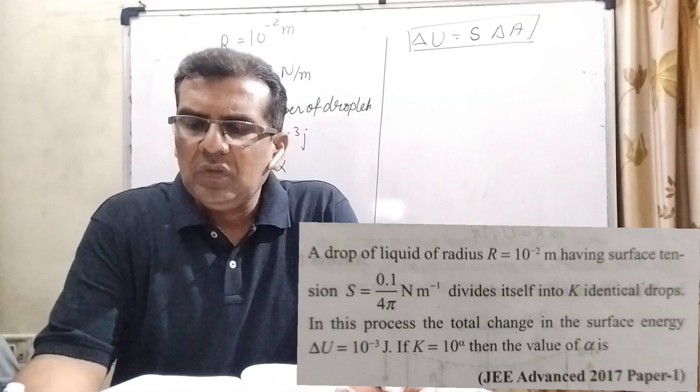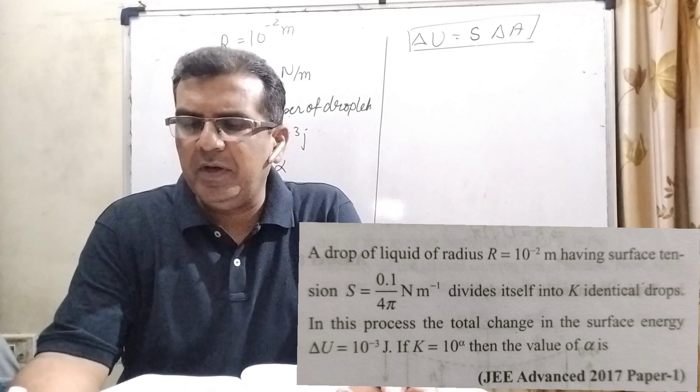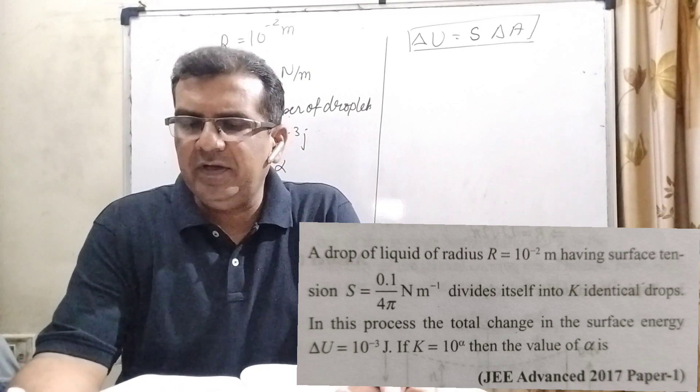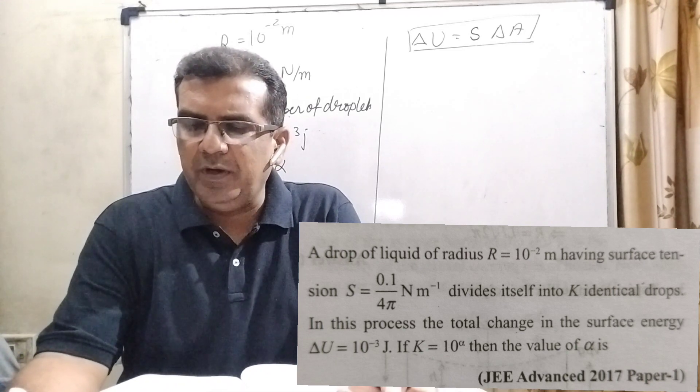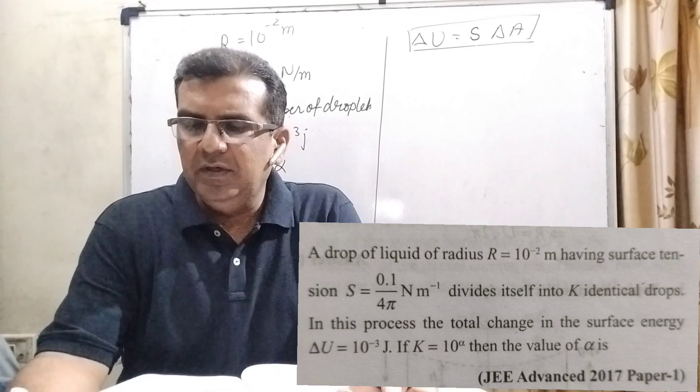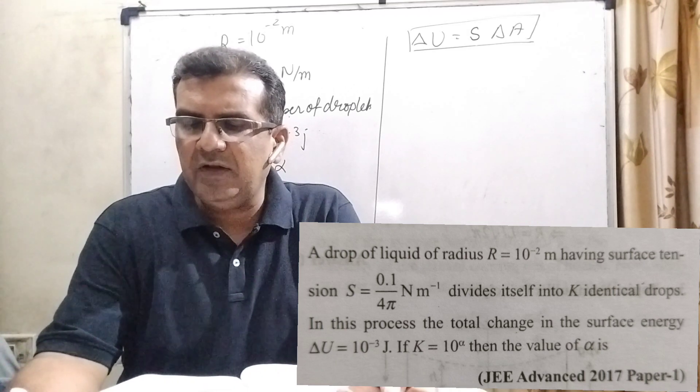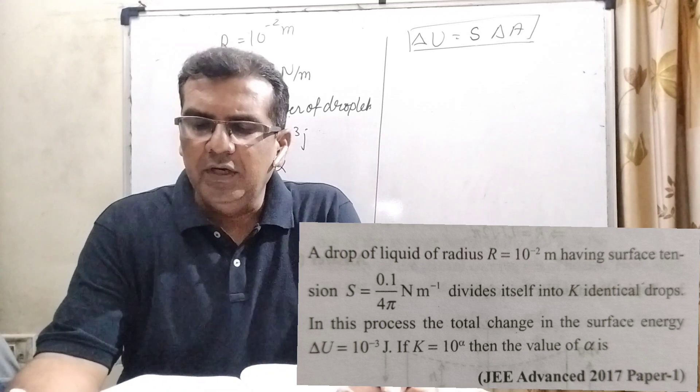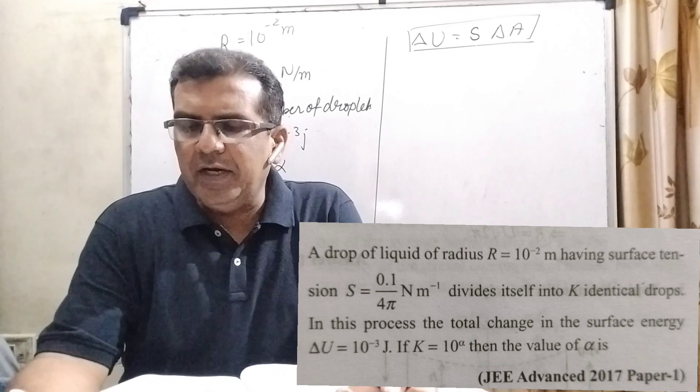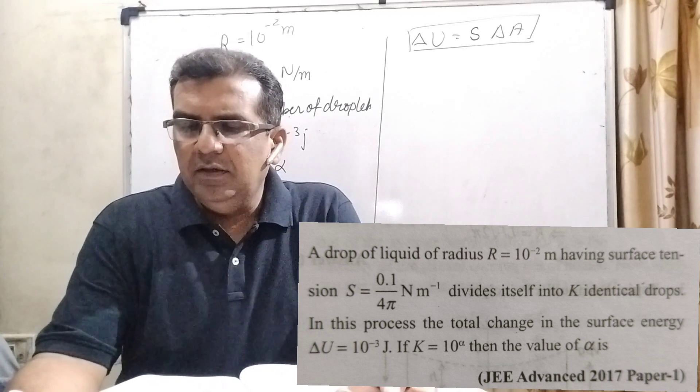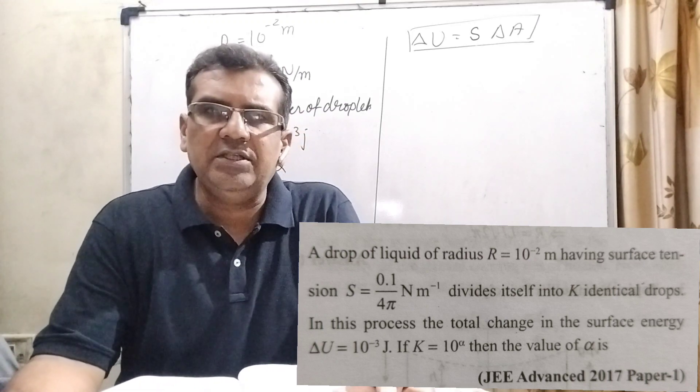Now here is the question. A drop of liquid of radius R equal to 10 raised to the power minus 2 meter having surface tension S equal to 0.1 by 4 pi Newton per meter divides itself into k identical drops. In the process, the total change in the surface energy delta U equal to 10 raised to the power minus 3 joule. If k equal to 10 raised to the power alpha, then the value of alpha is. This question is asked JEE Advanced 2017.